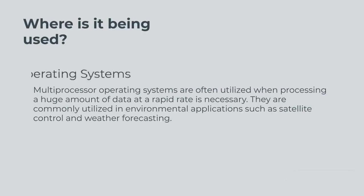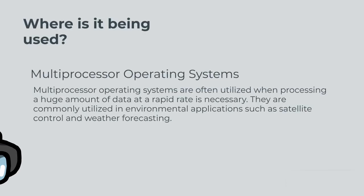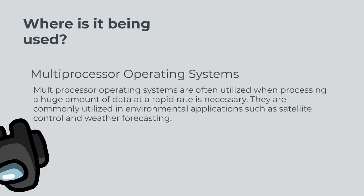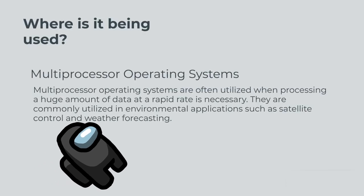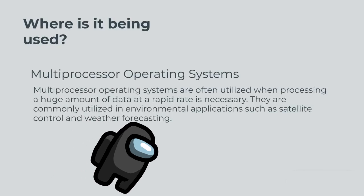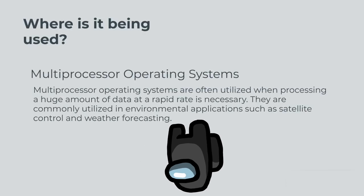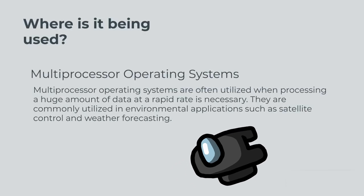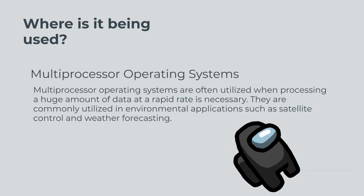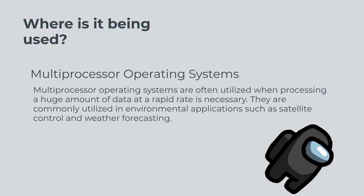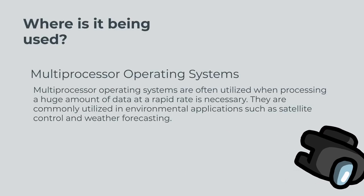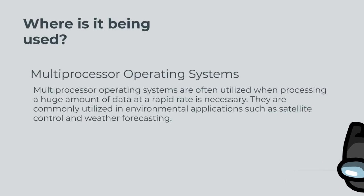Where is it being used? The multiprocessor operating systems are often utilized when processing a huge amount of data at a rapid rate is necessary. They are commonly utilized in environmental applications such as satellite control and weather forecasting.